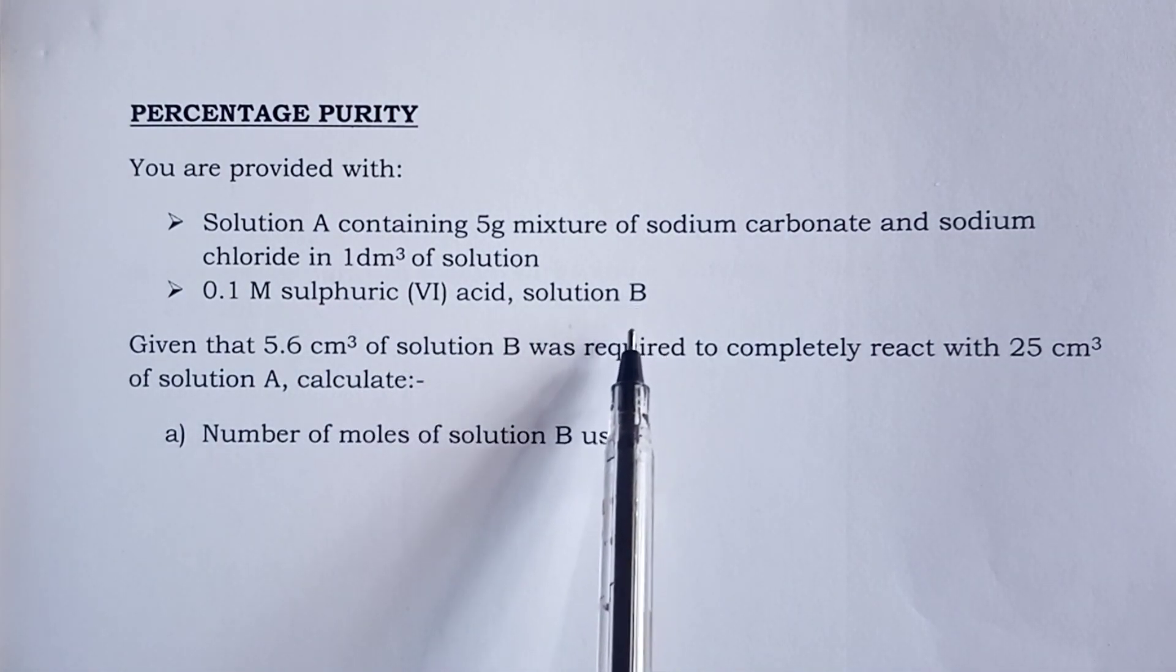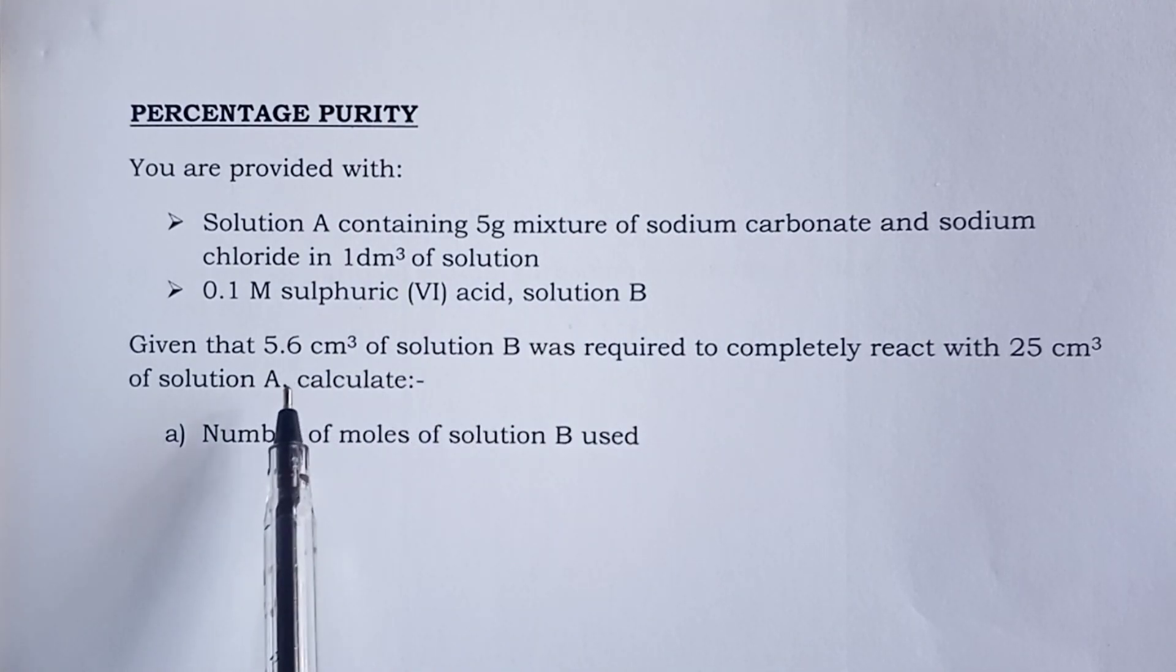So straight to the question, you are provided with solution A containing 5 gram mixture of sodium carbonate and sodium chloride in 1 liter of solution. We are also given 0.1 molar sulfuric acid and that is solution B. So we are being told that 5.6 cubic centimeters of solution B was required to completely react with 25 cubic centimeter of solution A. Now before we go into the calculations,